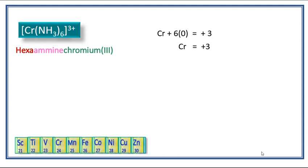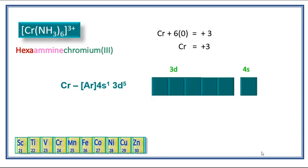The next step is we have to write the electronic configuration of the central metal ion. For that we need the atomic number of chromium. Chromium atomic number is 24, so its electronic configuration is [Ar] 4s1 3d5.